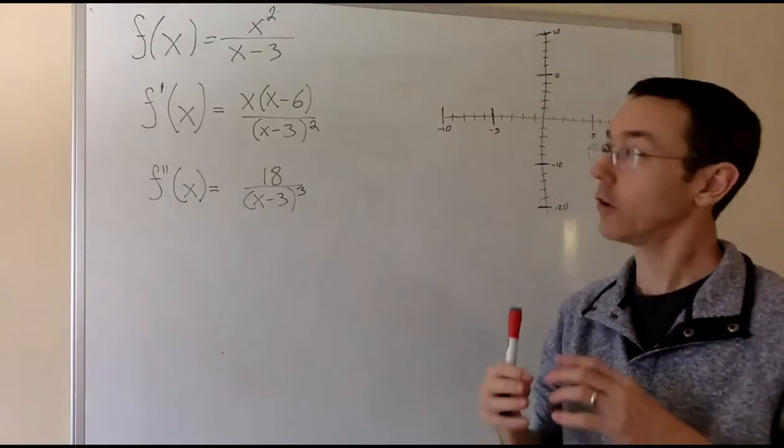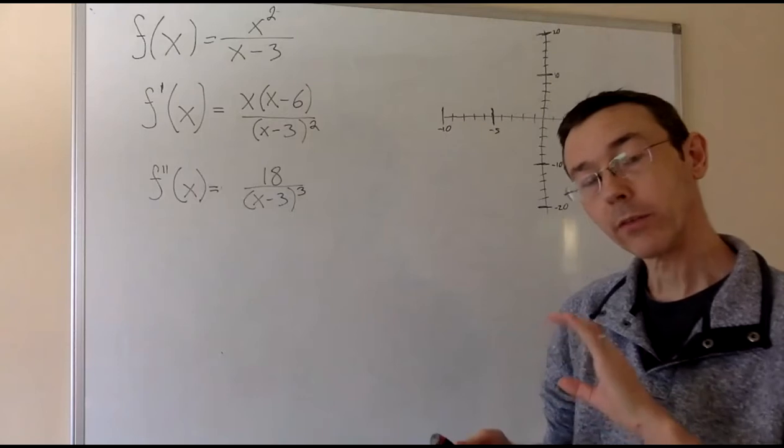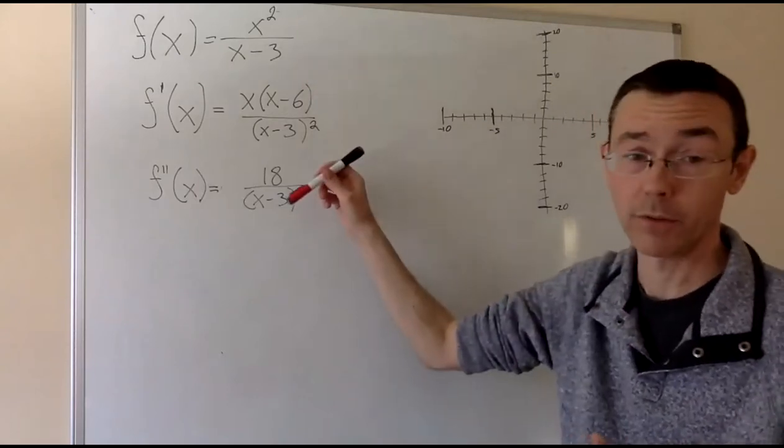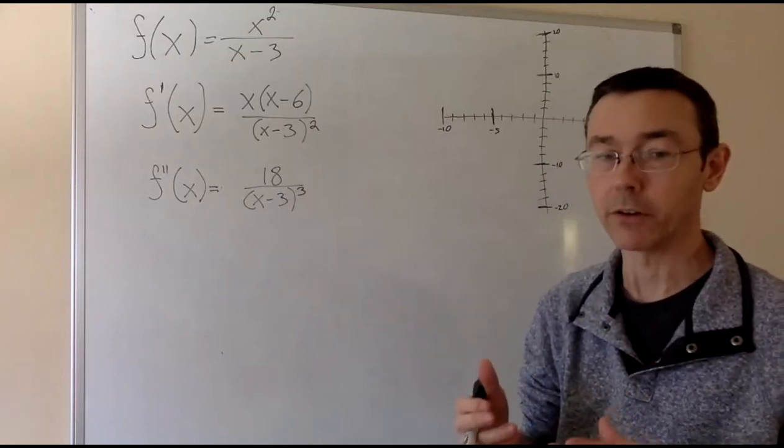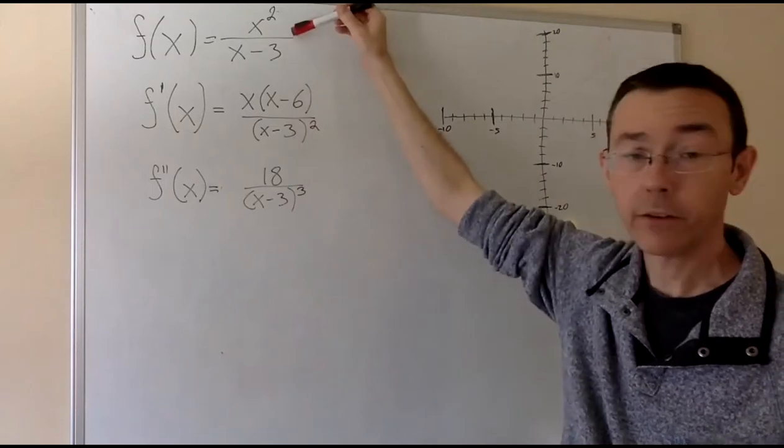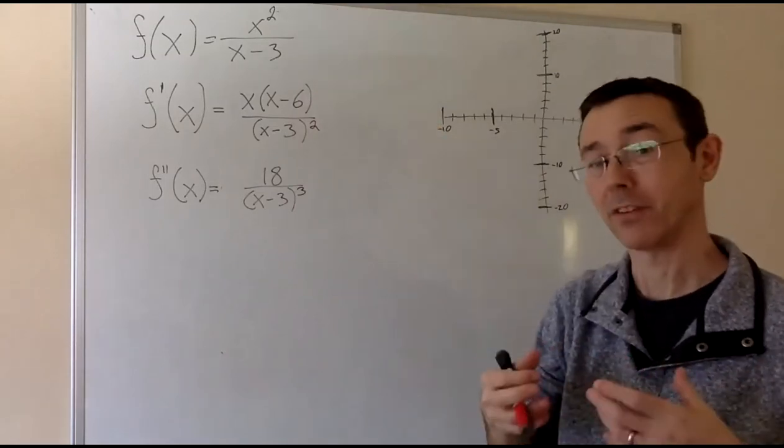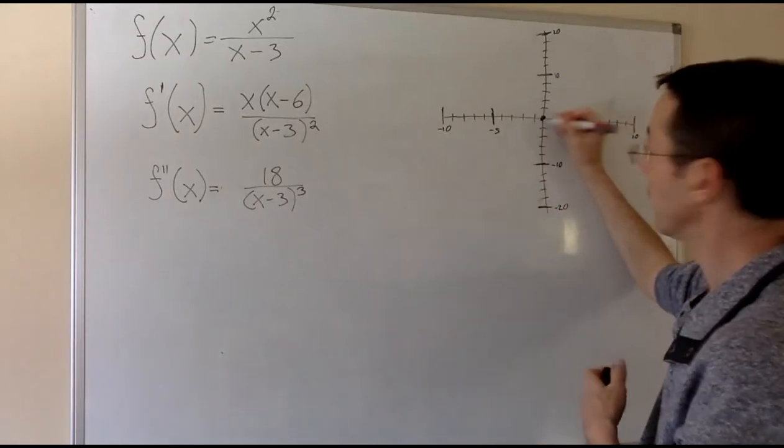When we want to sketch a graph from a given function, we always want to start with the things we can discern about the function itself, just without looking at the derivatives. In particular, we should plot any obvious points. Usually that just means intercepts. So here I see that when x is 0, y is 0. That'll be both of my intercepts. It's going to pass through the origin.